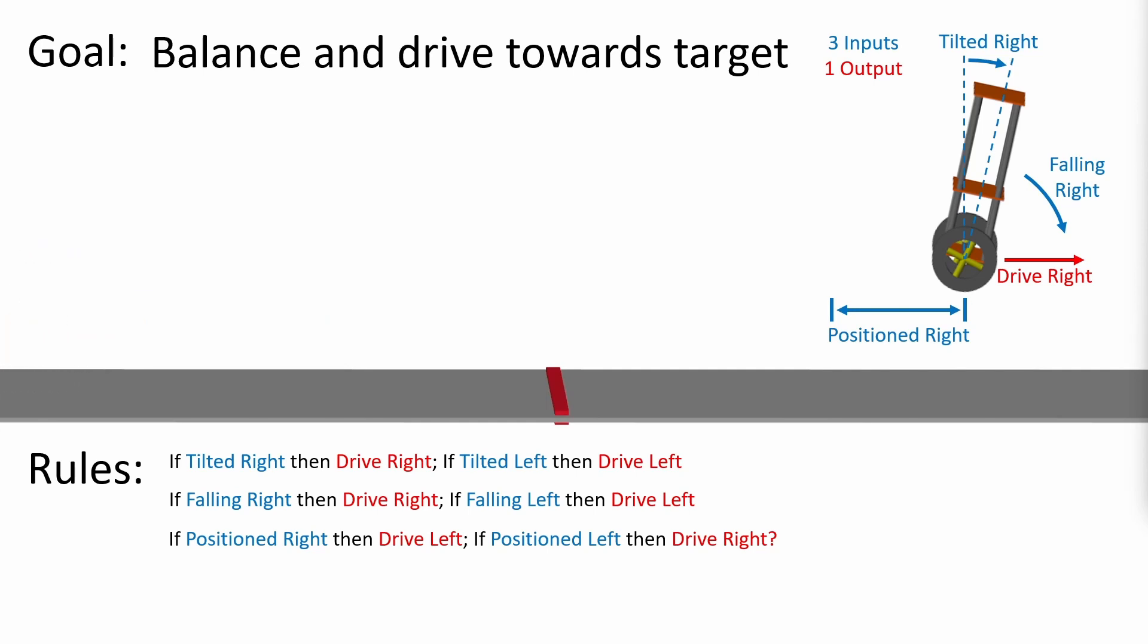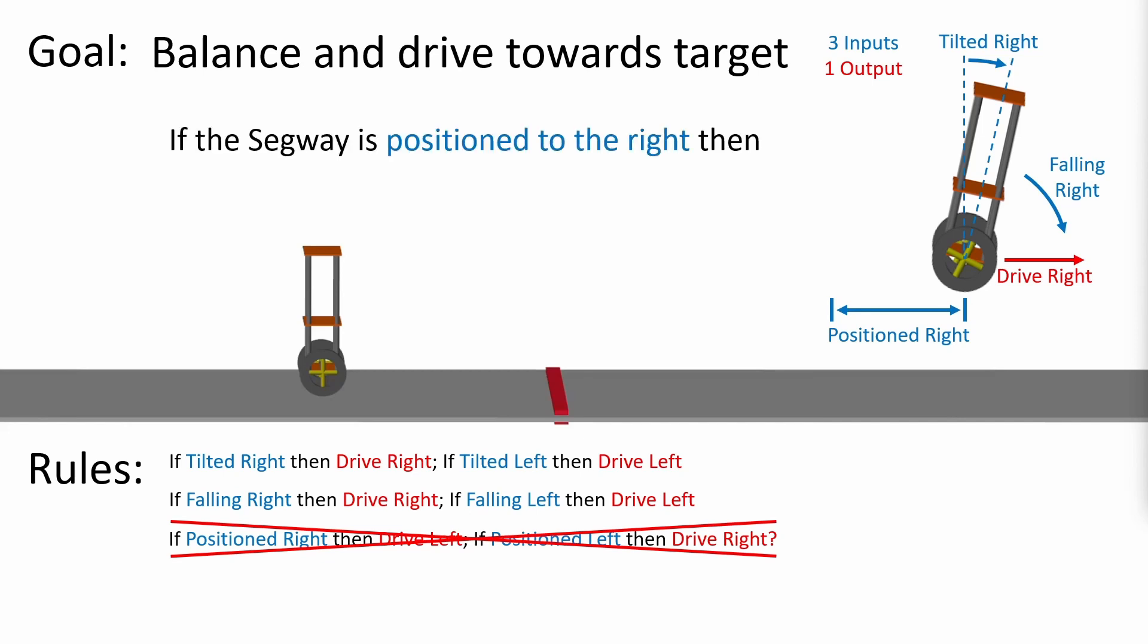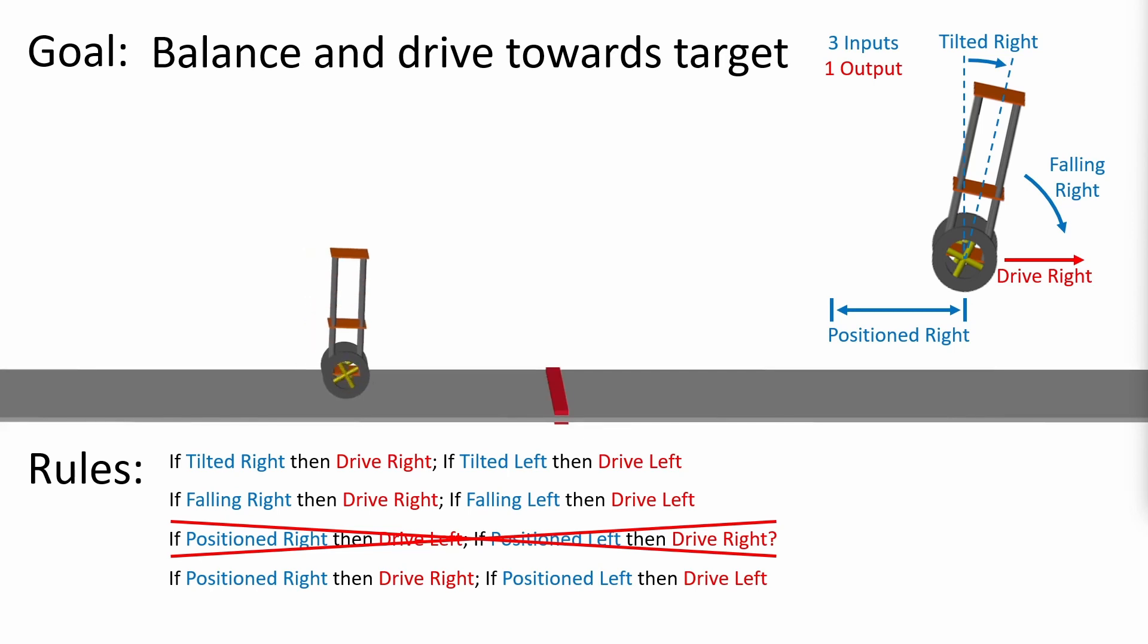Let's think about this very carefully. What we do know is that to move left, the Segway must already be tilting towards the left. It makes sense then that when the Segway is positioned to the right, we actually need to drive slightly to the right to first establish the correct tilt. Let's simulate again to confirm this theory.